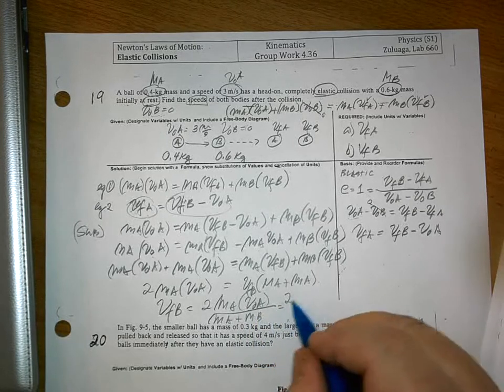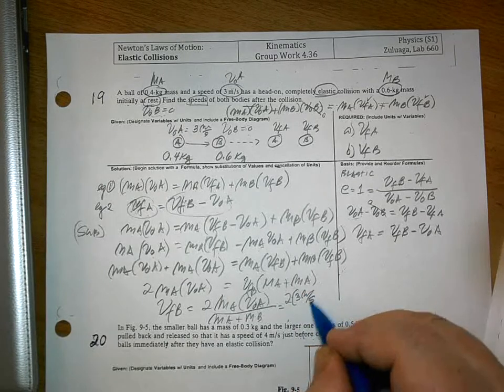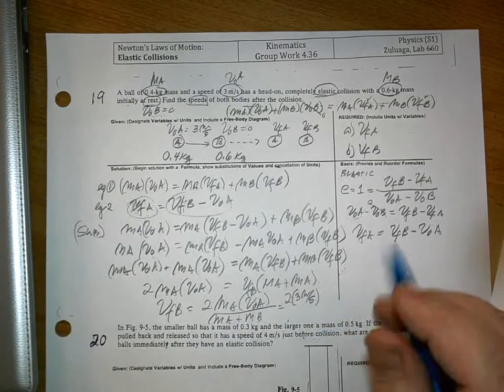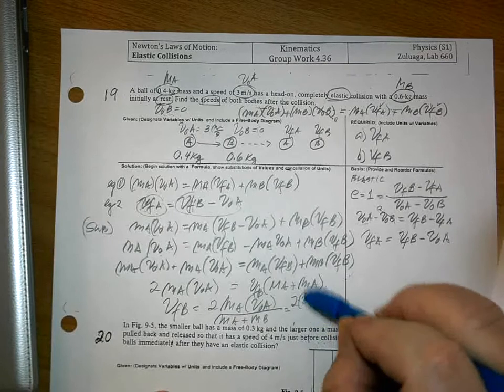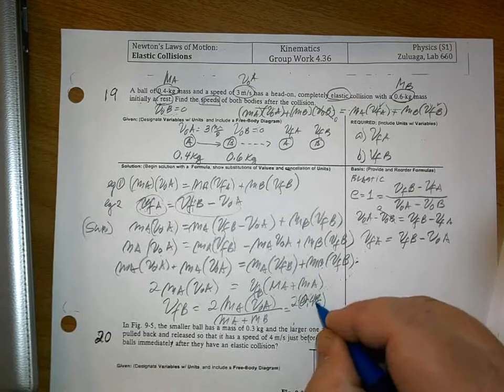Substituting values, you have 2. Your MA is 3 meters per second. Oh, no.